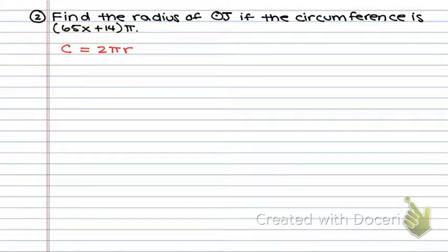Now I must not be given R because it's asking me to find that. But it is telling me that the circumference is 65X plus 14 pi. So in place of C, I'm going to substitute 65X plus 14 pi equals 2 pi R. Now my job is to solve for R. So in order to get R by itself, I have to divide by 2 pi on both sides. Divide by 2 pi. Divide by 2 pi.